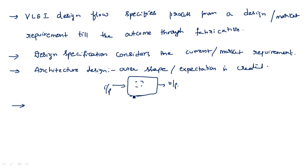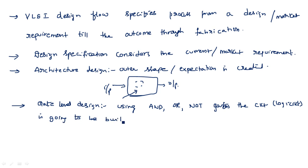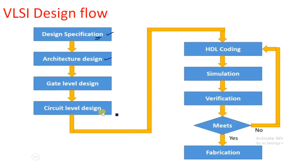Once the outer architecture view is designed, we go into the internal block diagrams — what is the internal structure needed. The next step is gate level design. In the gate level design, we design the entire circuit in the form of gates, using standard gates like AND gates, OR gates, NOT gates, and other basic gates. This logic circuit built from gates is the gate level design.